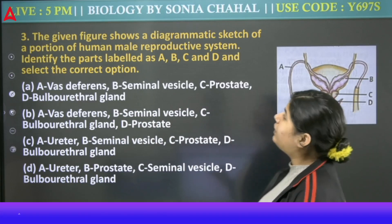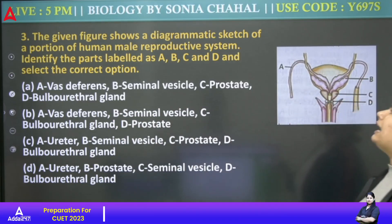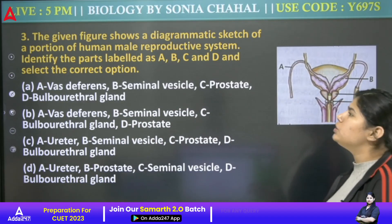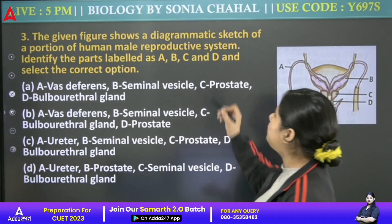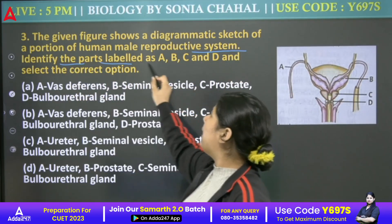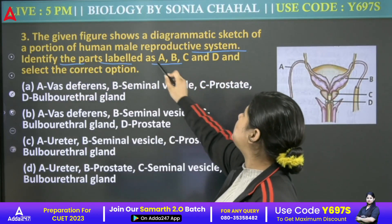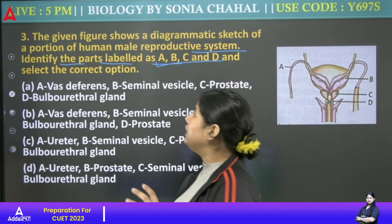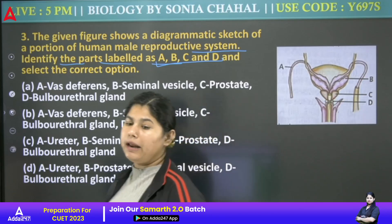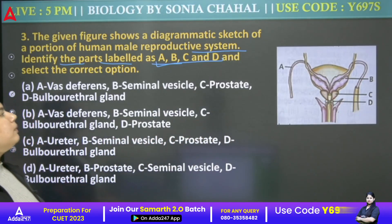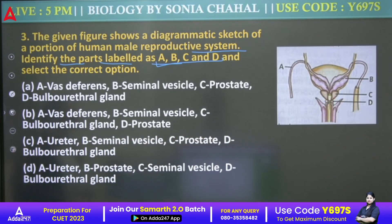The given figures show a diagrammatic sketch of a portion of the human male reproductive system. Identify the part labeled as A, B, C, and D and select the correct option. We have parts A, B, C, and D given here, and we have to identify what each one is.